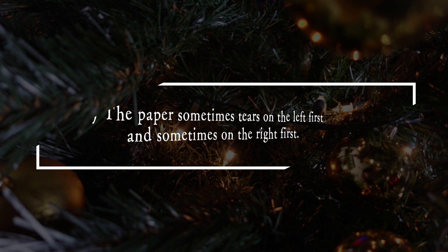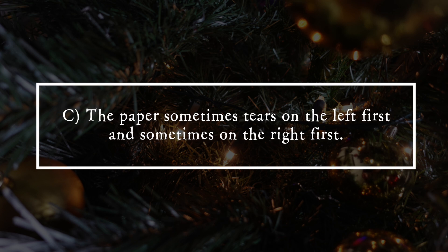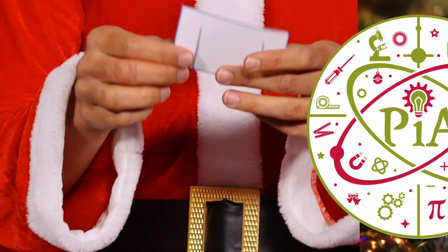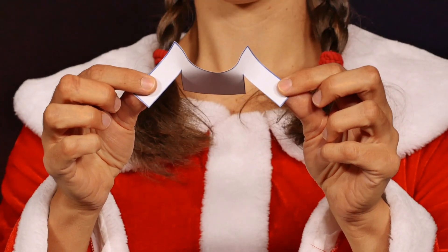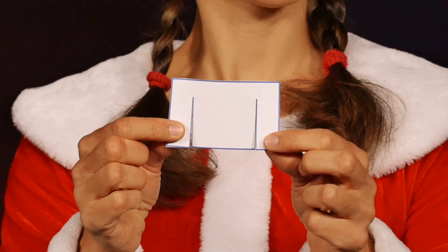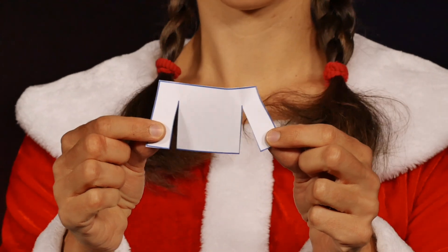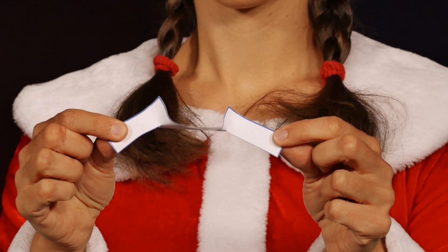The answer is C. The paper sometimes tears on the left side first and sometimes on the right side first. A sheet of paper consists of cellulose fibers that vary in length and orientation.